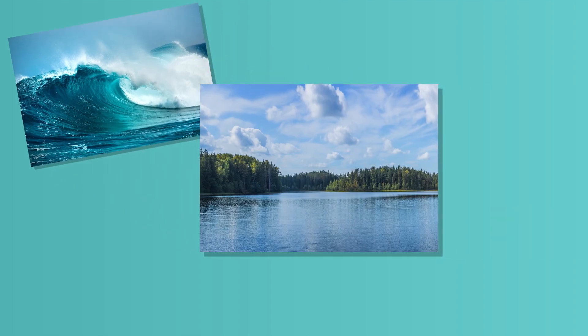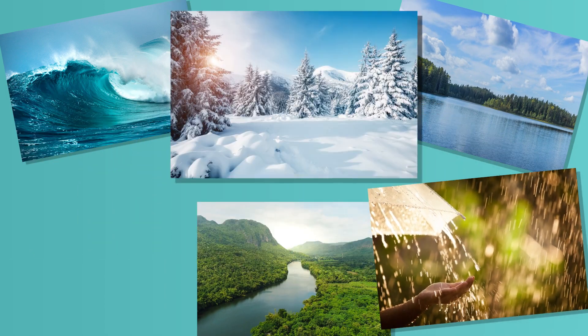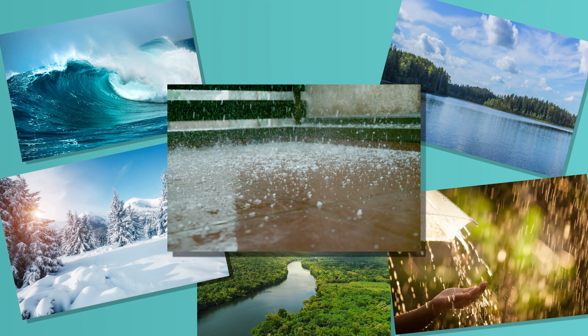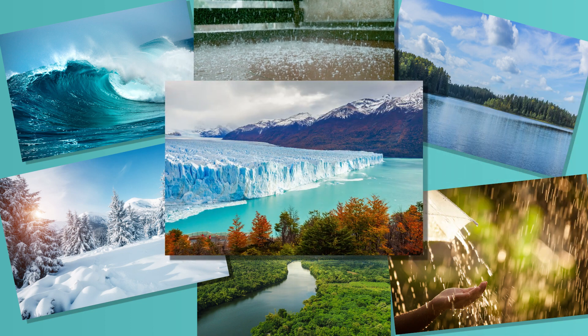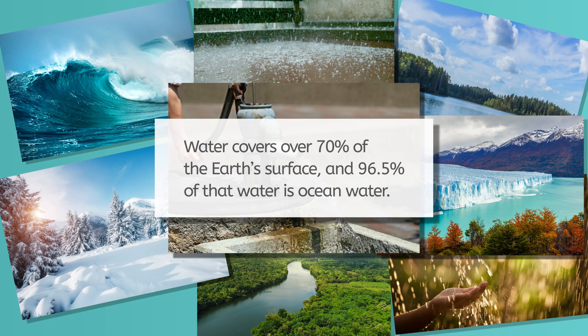On your list, you probably have the oceans, lakes, rivers, right? You may have rain, snow, and other precipitation, too. What about glaciers? Or what about groundwater, which is the water just under the surface of the Earth? In fact, water covers over 70% of the Earth's surface, with the largest part of that, 96.5%, being the oceans.